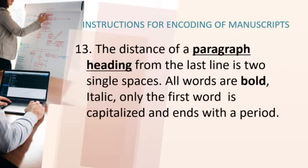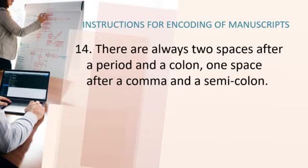Number 12, there are 2 single spaces between the left side heading and the first line after it. For number 13, the distance of a paragraph heading from the last line is 2 single spaces. All words are bold and italic, only the first word is capitalized, and it ends with a period. Number 14, there are always 2 spaces after a period and a colon, and one space after a comma and a semicolon.